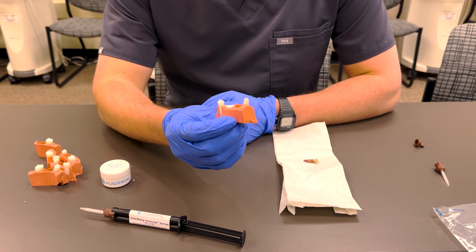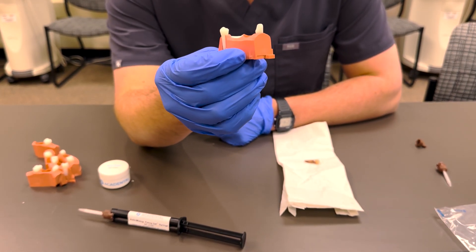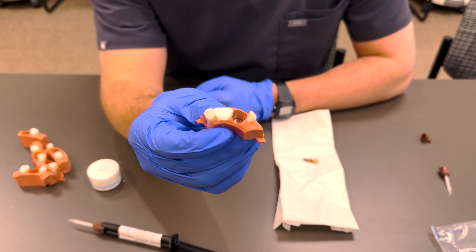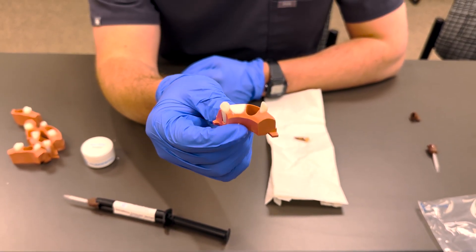I'm going to go ahead and do that. It should look something like this. I like to fill it pretty much all the way up with the apex putty and make sure it's nice and smooth and fully condensed, because if there are voids they will show up in the radiograph.